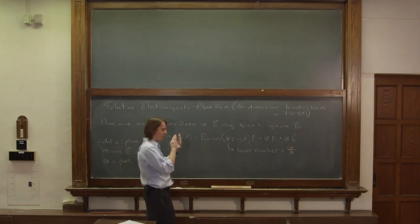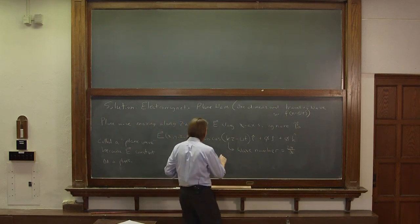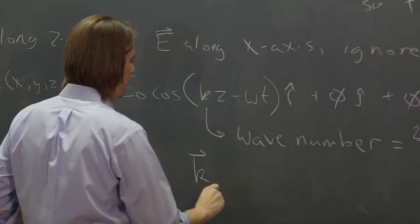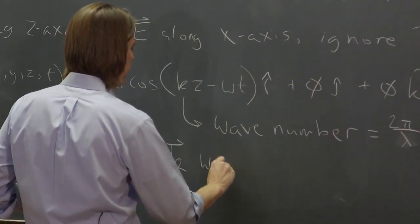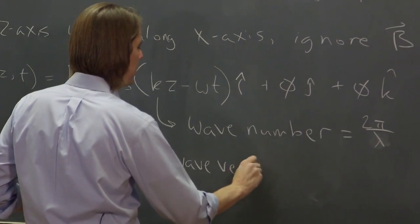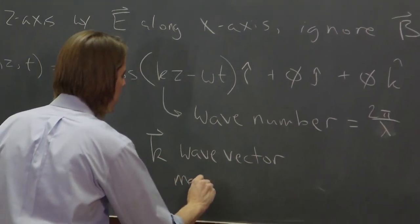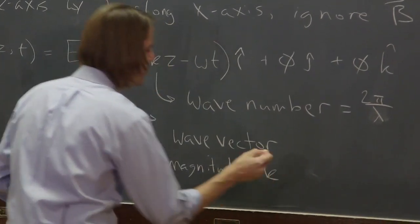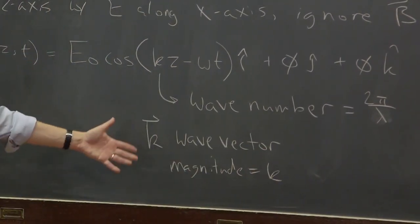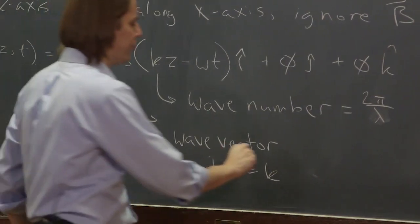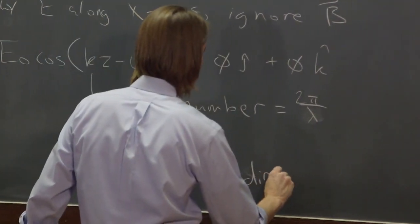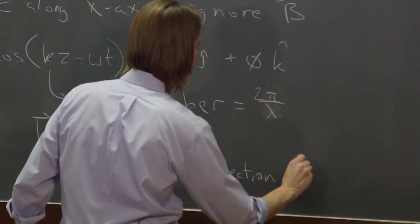So now when you're talking about this three-dimensional plane wave moving along a direction, we have something else called k vector. This is the wave vector. And simply its magnitude is just k. So the wave number is just the magnitude of the wave vector and its direction of propagation.